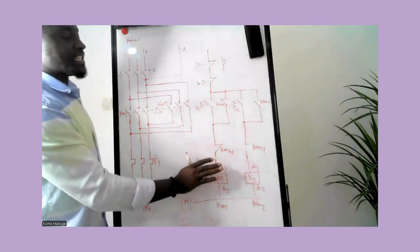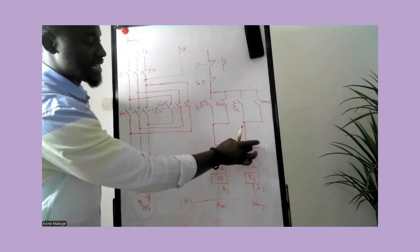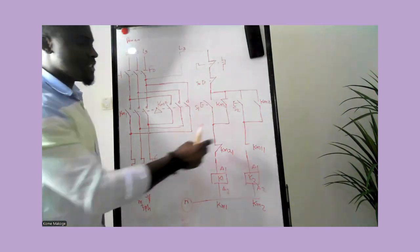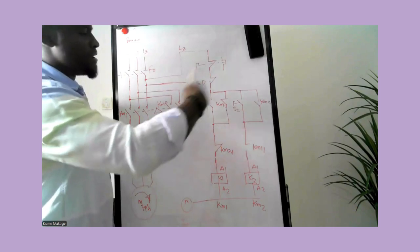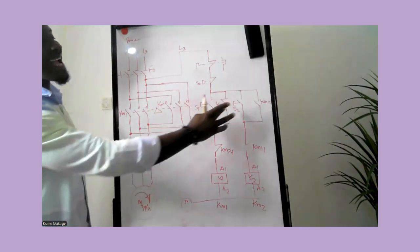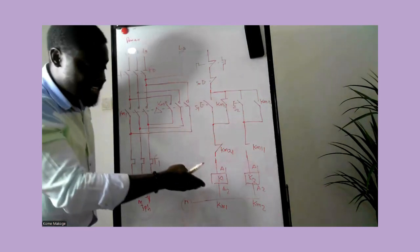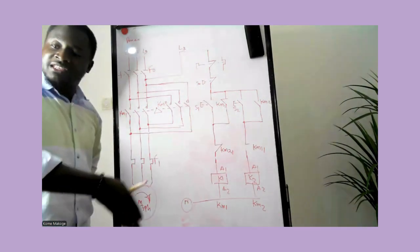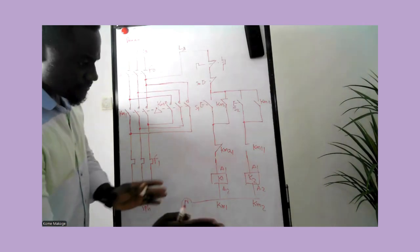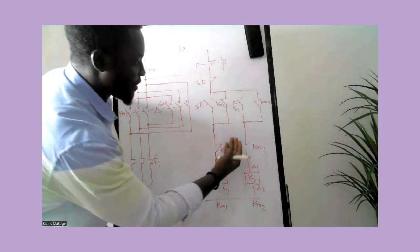This coil remains energized and this contact here is open. The reason we place this KM1 contact in the direction of KM2 is so that if someone tries to energize coil KM2 by pressing start push button S2, it will not allow current to flow from upstream to downstream — because KM1 is already energized and has opened all its associated contacts. This prevents both coils from being energized simultaneously, which would confuse the motor.